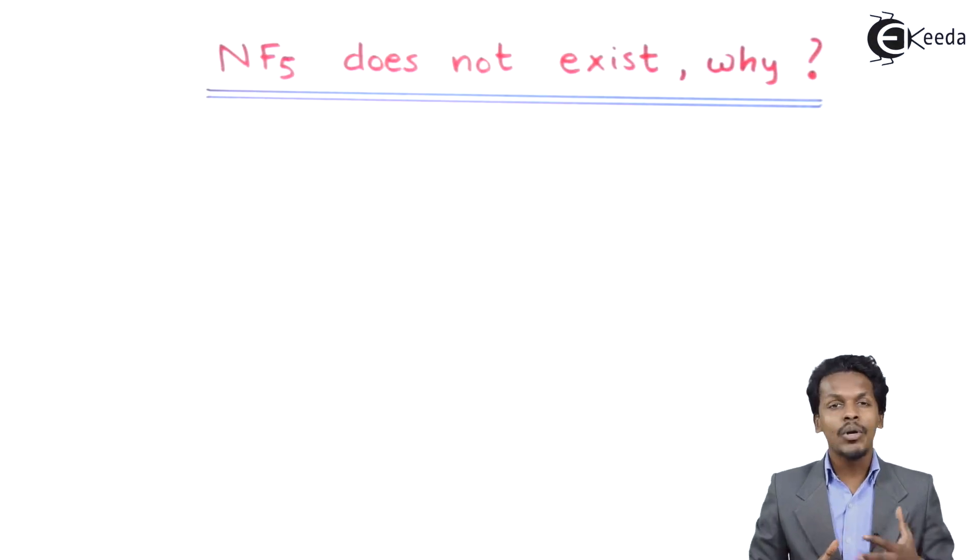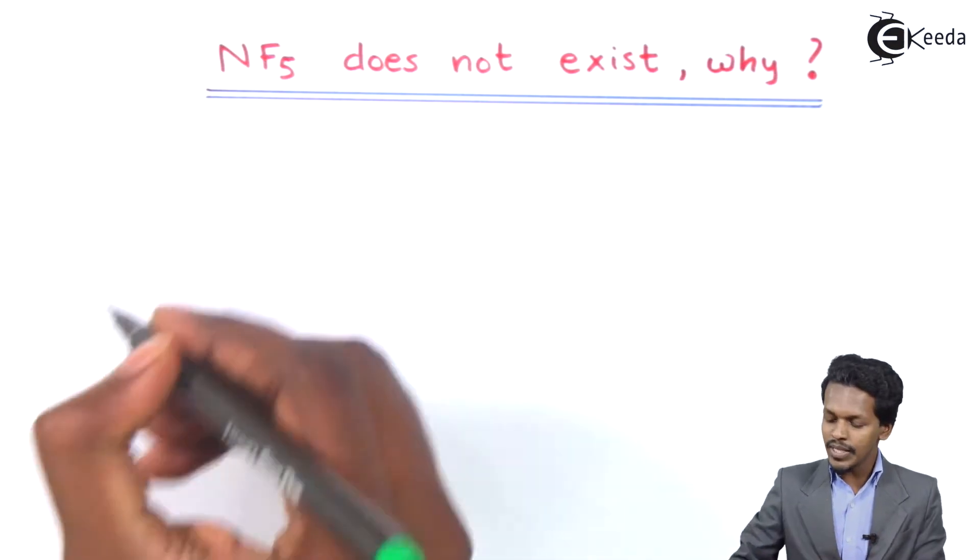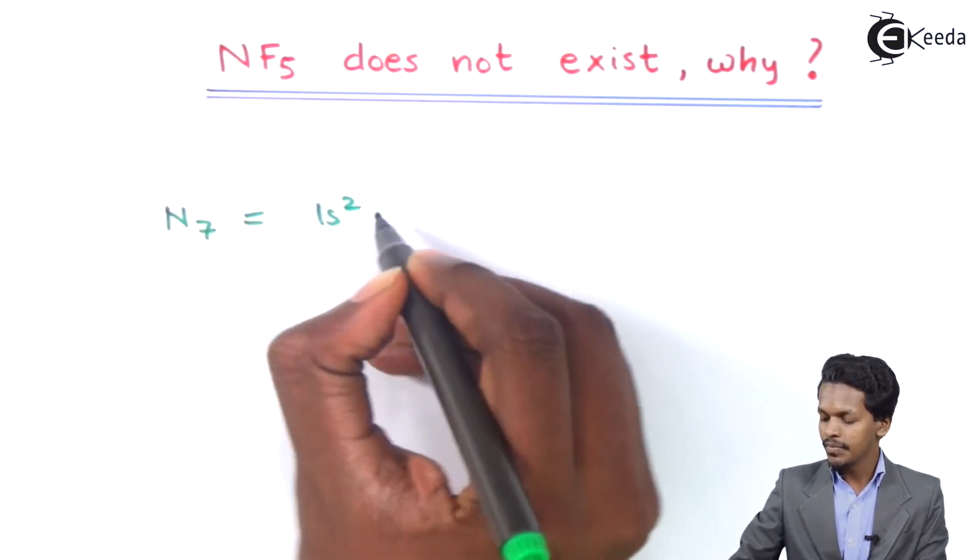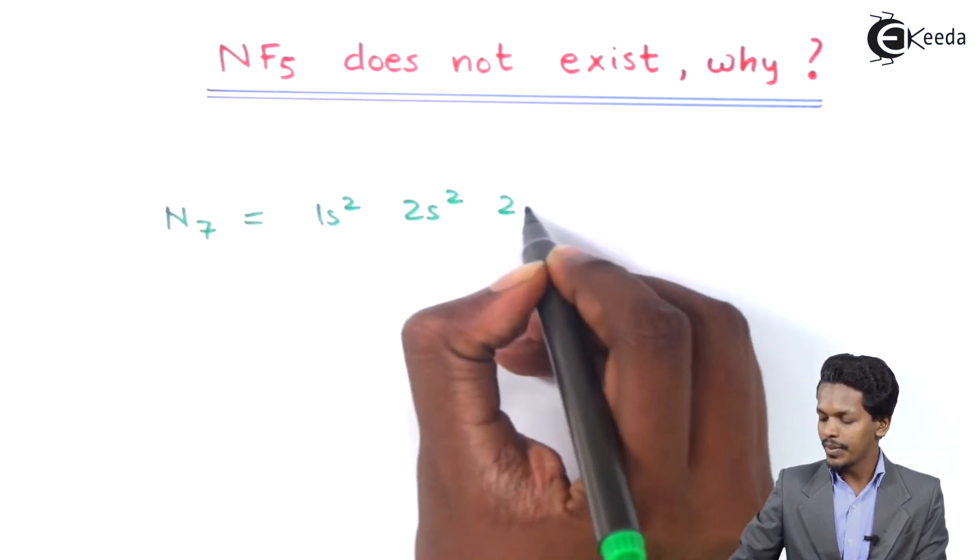In the previous lecture we discussed the oxidation state of nitrogen. Based on that, we're going to explain why NF5 does not exist. If we consider the electronic configuration of nitrogen, we can write it as 1s², 2s², 2p³.